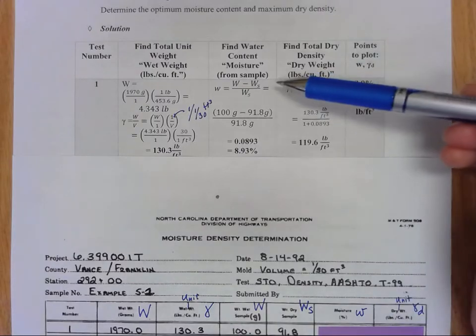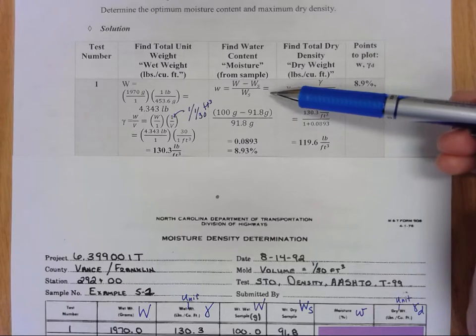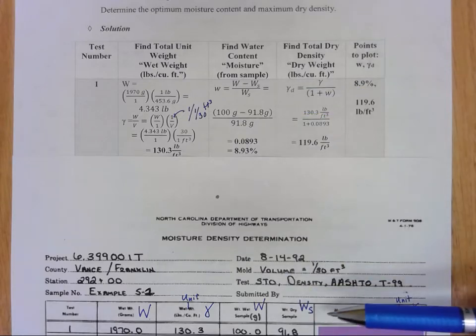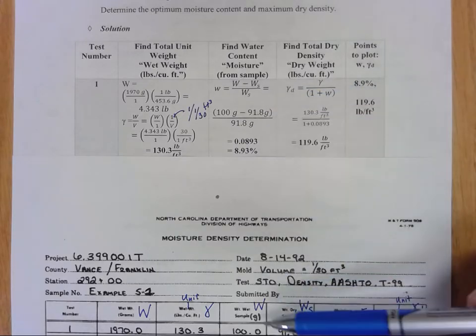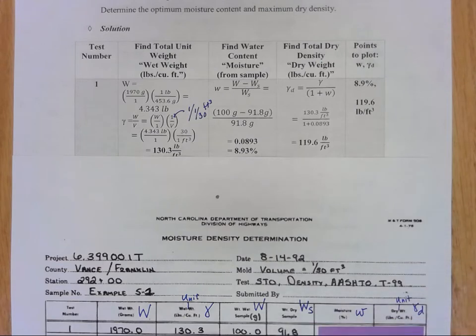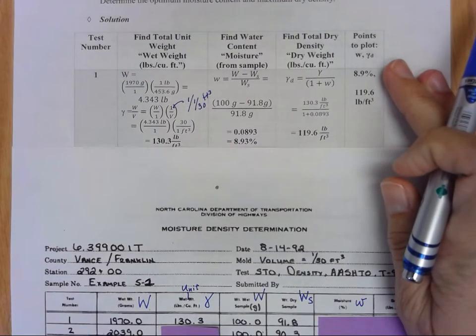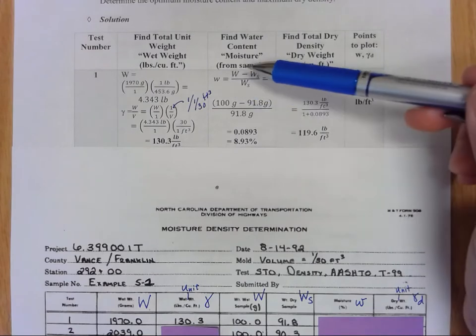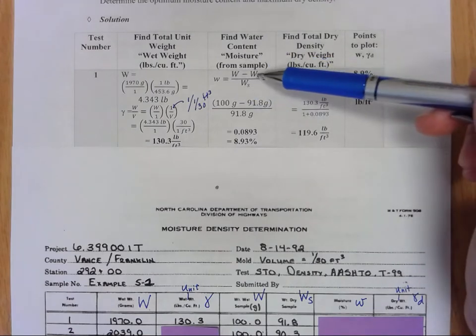Next thing we're going to do is find the water content, what they call the moisture content percent, and the way we do that is we just use this sample data in the middle here. So we have a hundred grams for our total weight of that sample and then we know that the weight of the solids of that sample was 91.8.